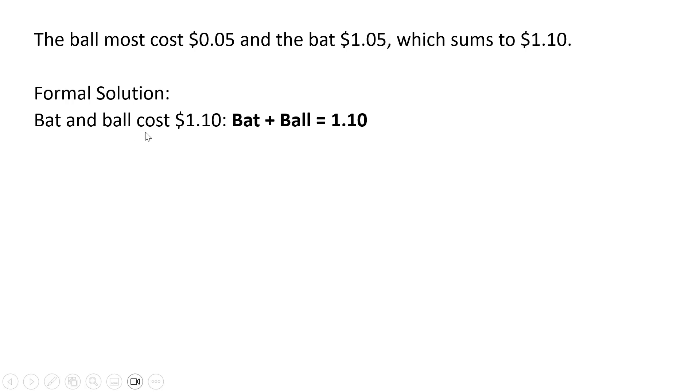We're told that the bat and ball cost $1.10, so we can form an equation. Bat plus ball equals $1.10. We're told that the bat costs $1 more than the ball. We can form an equation where the bat equals 1 plus the ball.